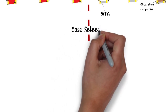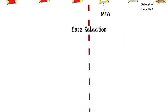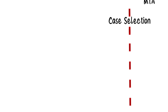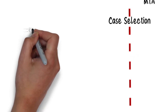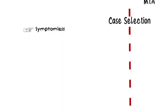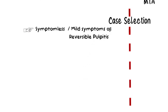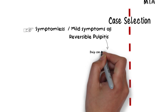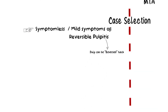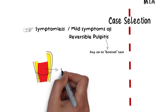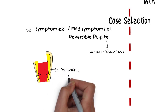Case selection increases the chances of success of Apexogenesis. A tooth having an open apex which was symptomless before, or had mild signs and symptoms of reversible pulpitis before the exposure occurred, is the ideal tooth to be treated with Apexogenesis. Because the pulp in reversible pulpitis can be reversed back to its normal state if the cause of inflammation is removed — hence it is still healthy and capable of sustaining continued development and growth of the tooth.